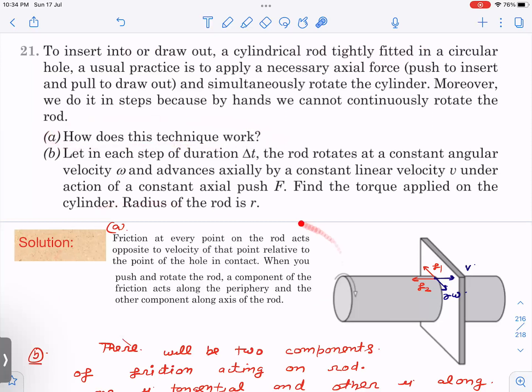What happens? This I have taken from the Hint section, it was properly written so it will be better for me to explain from this. Friction at every point on the rod acts opposite to the velocity of that point relative to the point on the hole. So here, the hole is at rest. When you are only pushing the rod in, friction is acting this way, mu n.